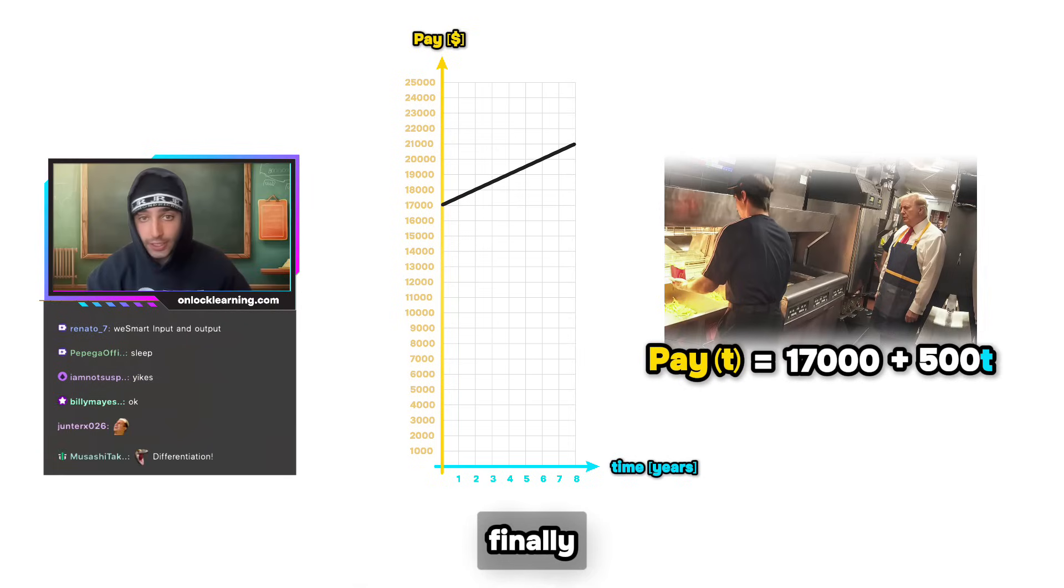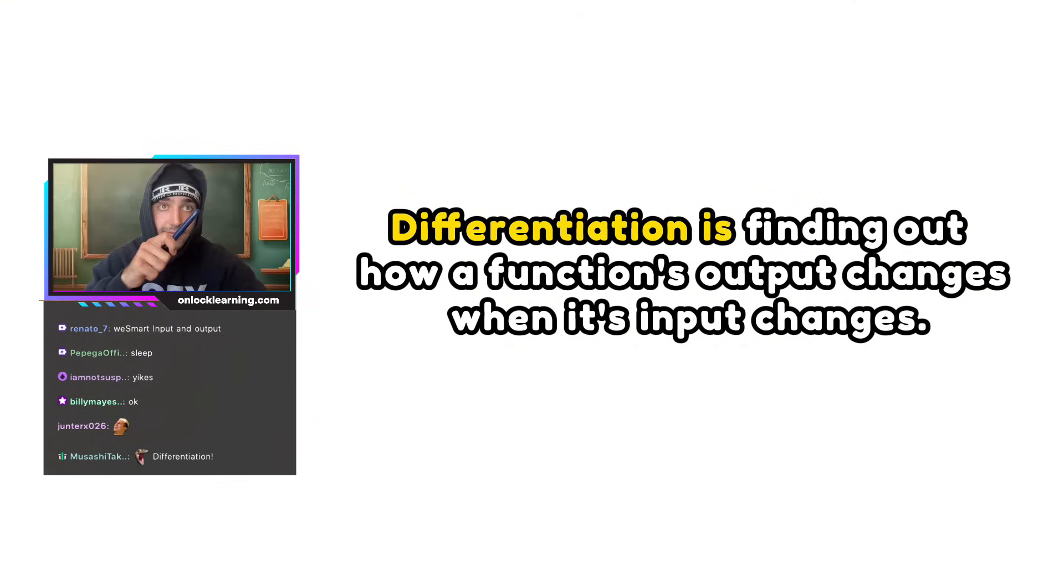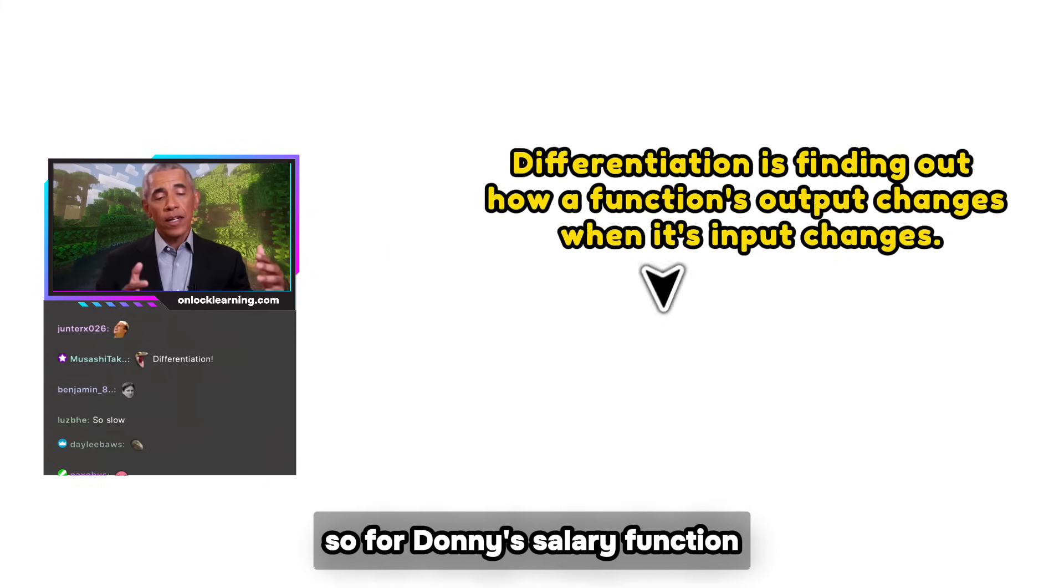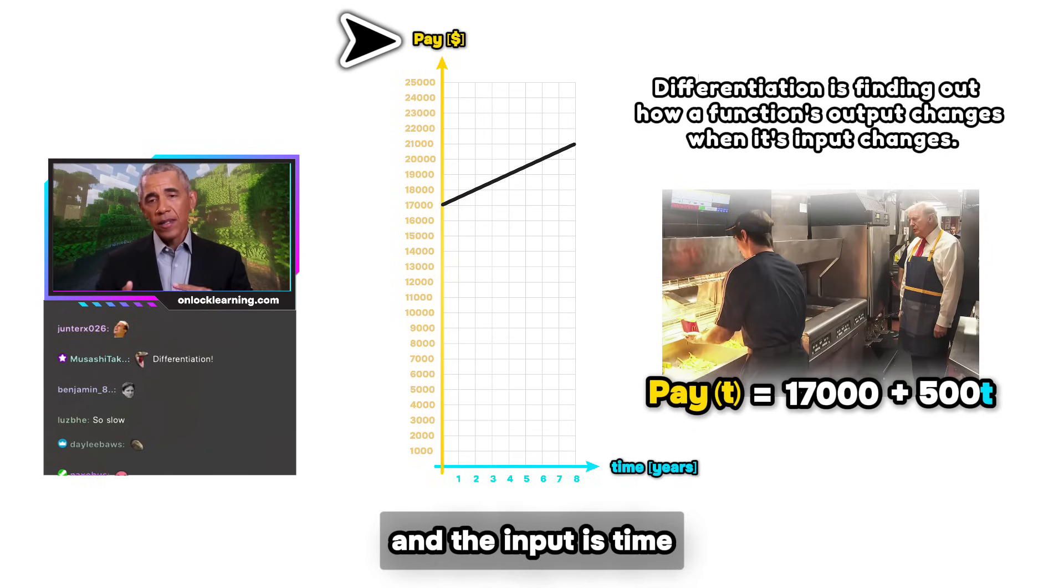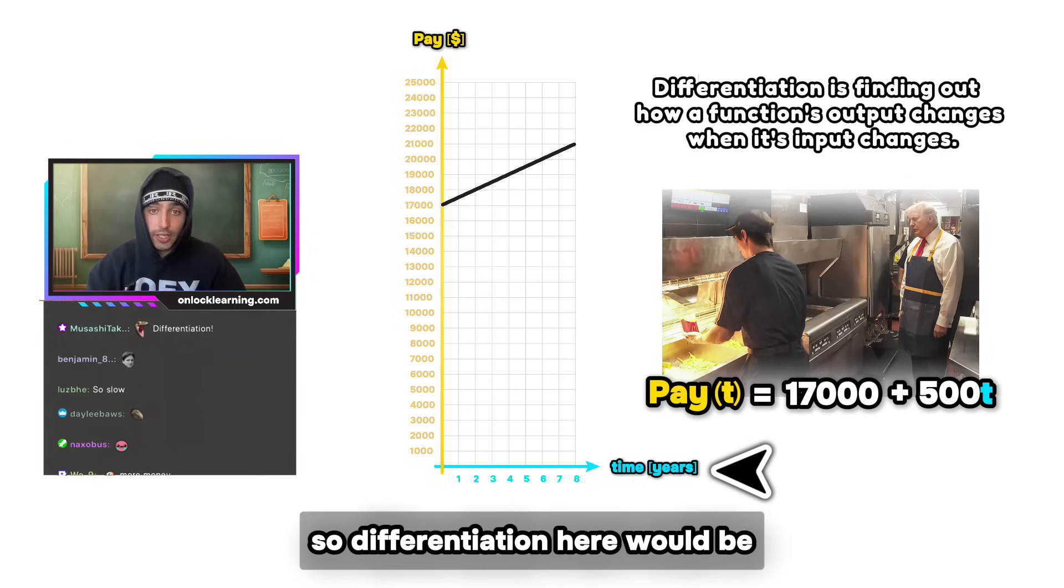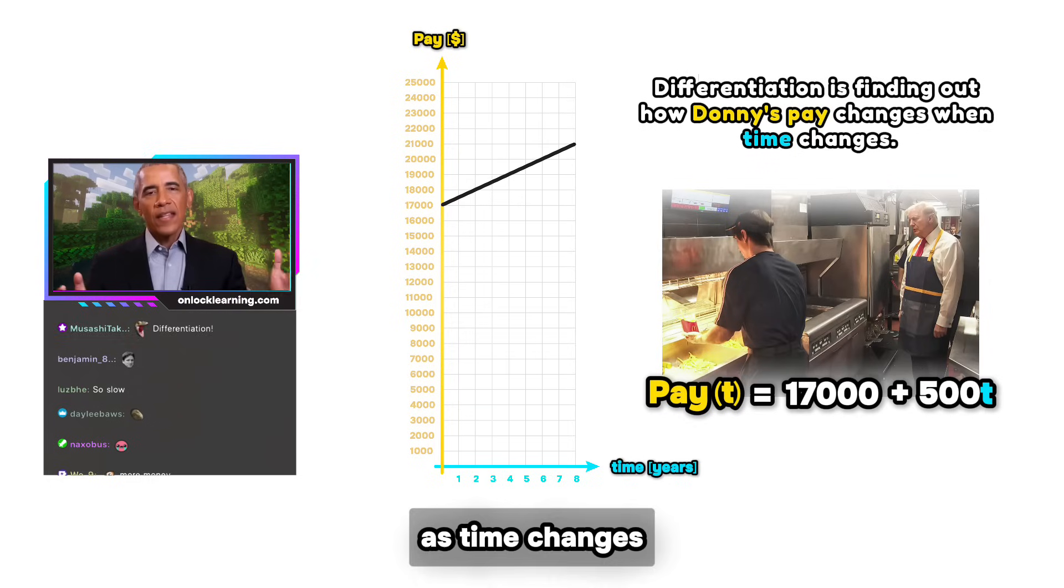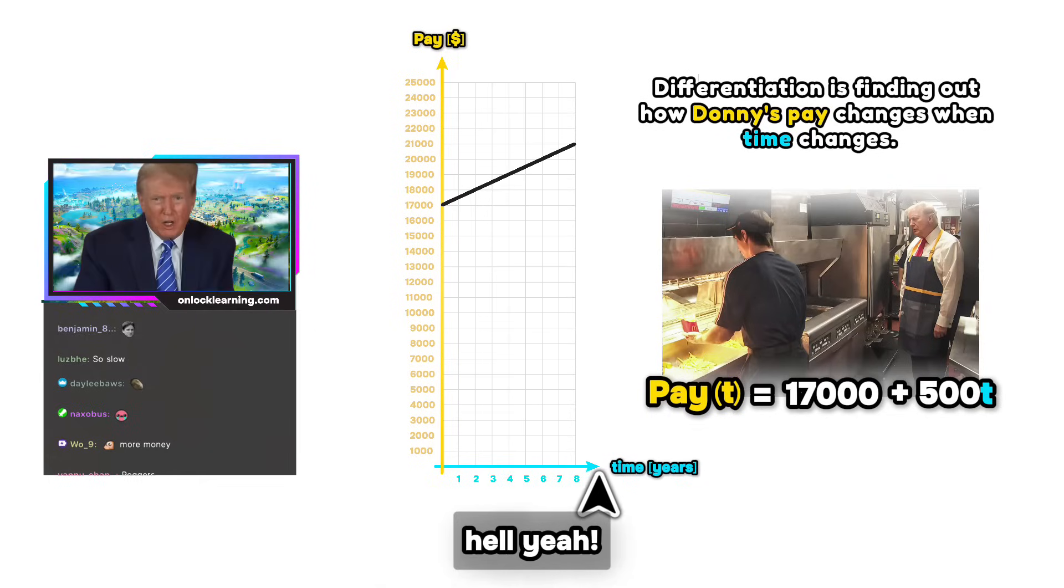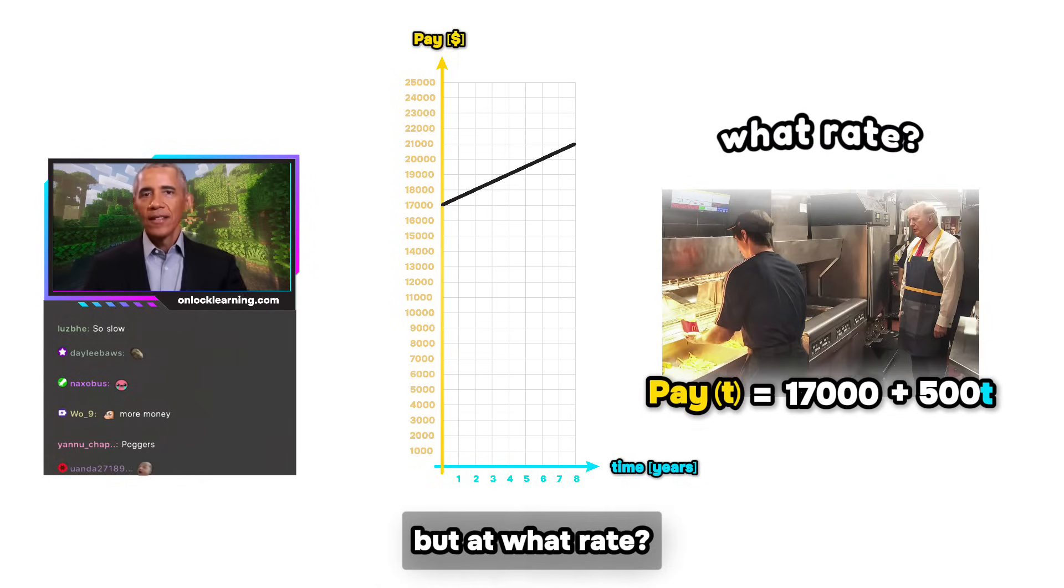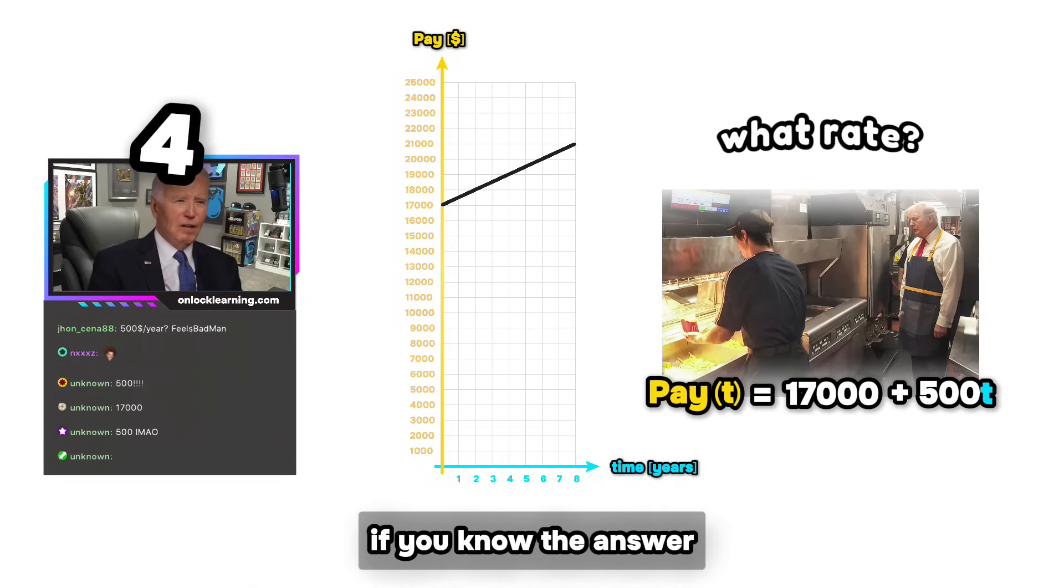Let's go back to our description, quick, quick, quick. Okay, read all of it. It's finding how a function's output changes when its input changes. Pause. So for Donnie's salary function, we said the output is his salary and the input is time. So differentiation here would be seeing how his pay changes as time changes. Yes, yes. It looks like it goes up with time. It does, it goes up every year. Hell yeah. But at what rate? I'll give y'all five seconds to figure it out. Spam the chat if you know the answer. Three, two, one.